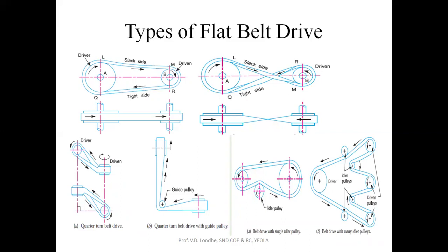The second type is the cross belt drive system, where the belt is crossed. In the cross belt drive, the motion of the driving wheel causes a tight side on one side while the other remains slack. Next is the quarter-turn belt drive, where the belt is turned at a quarter and uses a guide pulley to increase tension. Finally, there is the belt drive with a single idler pulley or multiple idler pulleys, where idler pulleys are inserted to increase belt tension, avoid slipping, and increase friction between the belt and pulley for maximum power transmission.